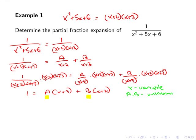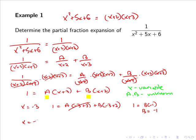If we pick x = −3, the A term cancels: we get 1 = B(−3+2) = B(−1), so B = −1. If we pick x = −2, the B term cancels: we get 1 = A(−2+3) = A(1), so A = 1.